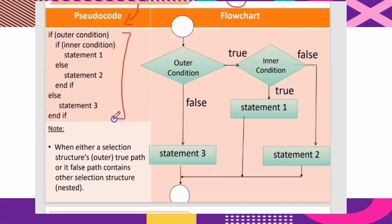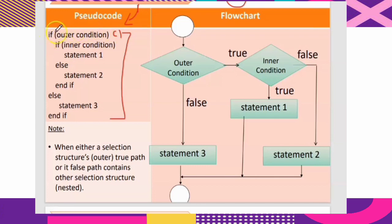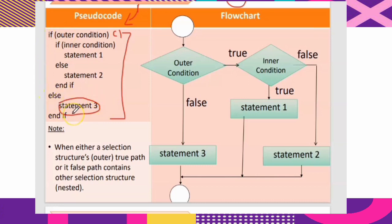This is the general format for the pseudocode. We start with IF followed by the outer condition — the first condition. If the first condition is false, the statement connected to the ELSE is executed, meaning statement three will be executed. But if the outer condition is true and the inner condition is also true, statement one will be executed.